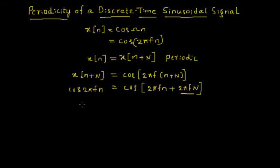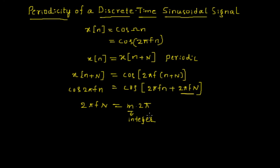This equation is satisfied if and only if 2πf·N is an integer multiple of 2π, that is, 2πf·N = m·2π, where m is an integer. So the given equation is satisfied if and only if 2πfN is an integer multiple of 2π.